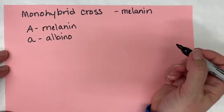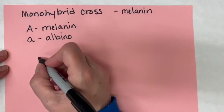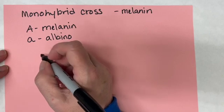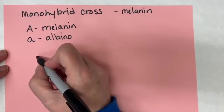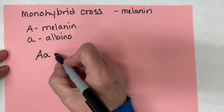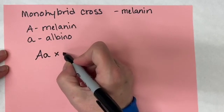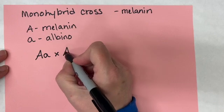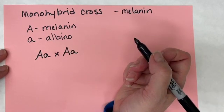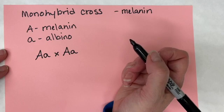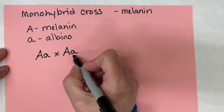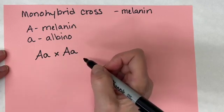Let's say you have a cross between two individuals that both make melanin but are heterozygous for the ability to make melanin. Heterozygous means having two different alleles. Both of these individuals make melanin even though they carry the recessive allele, because they have a dominant allele they can still make melanin.